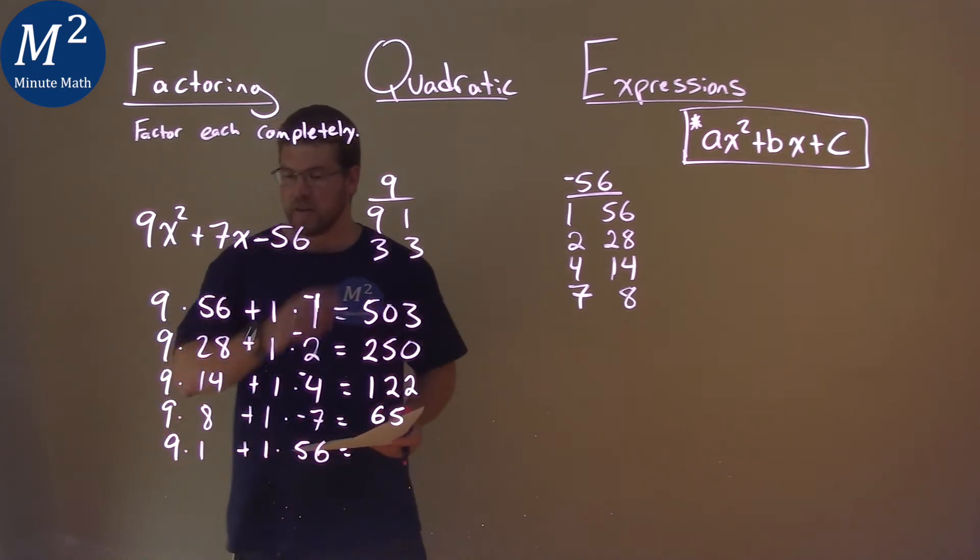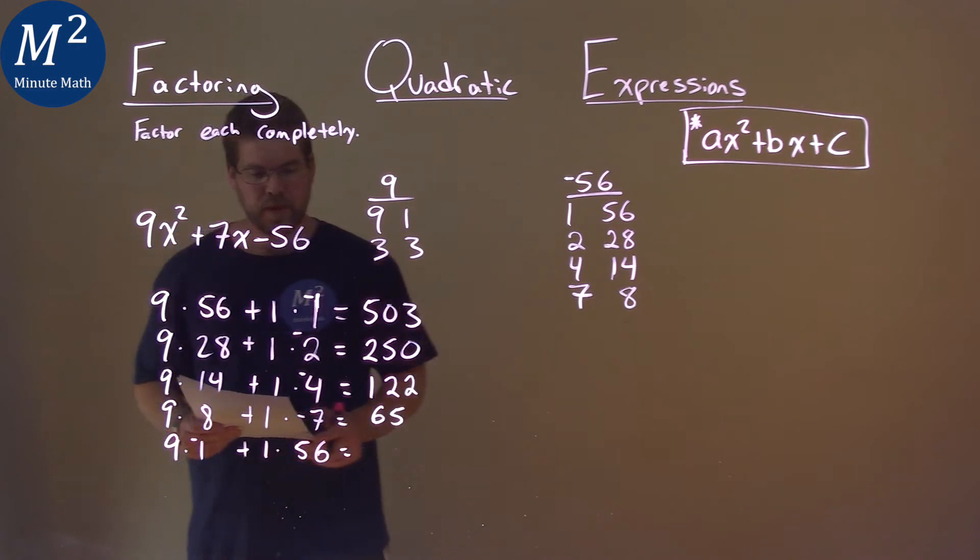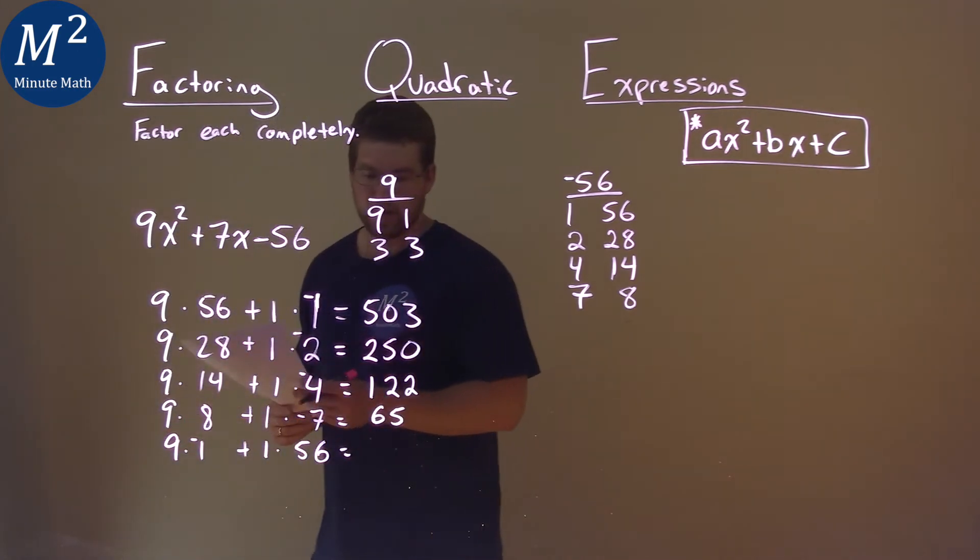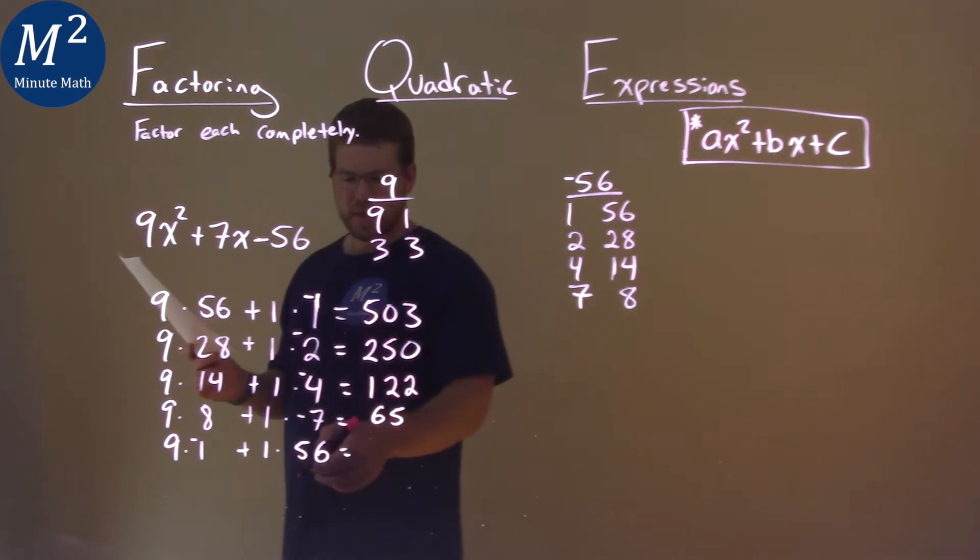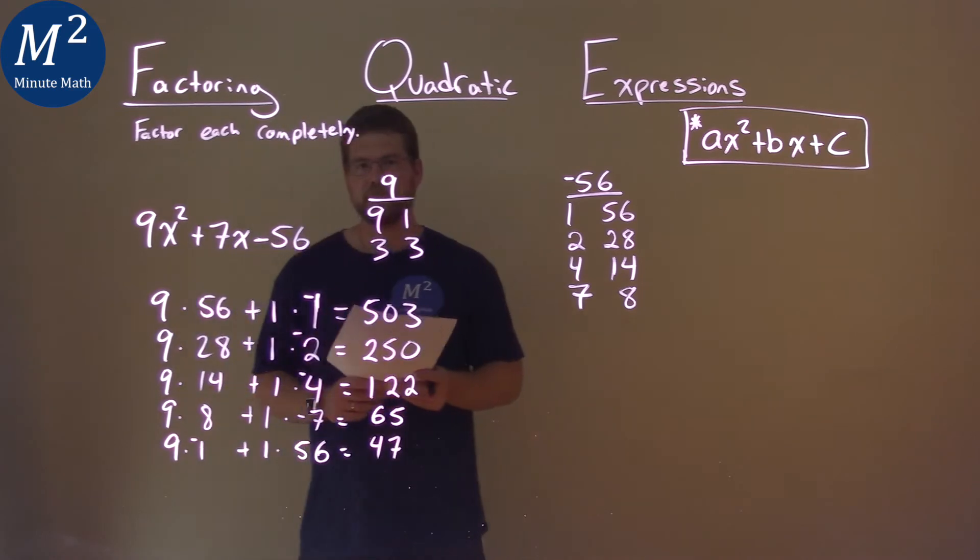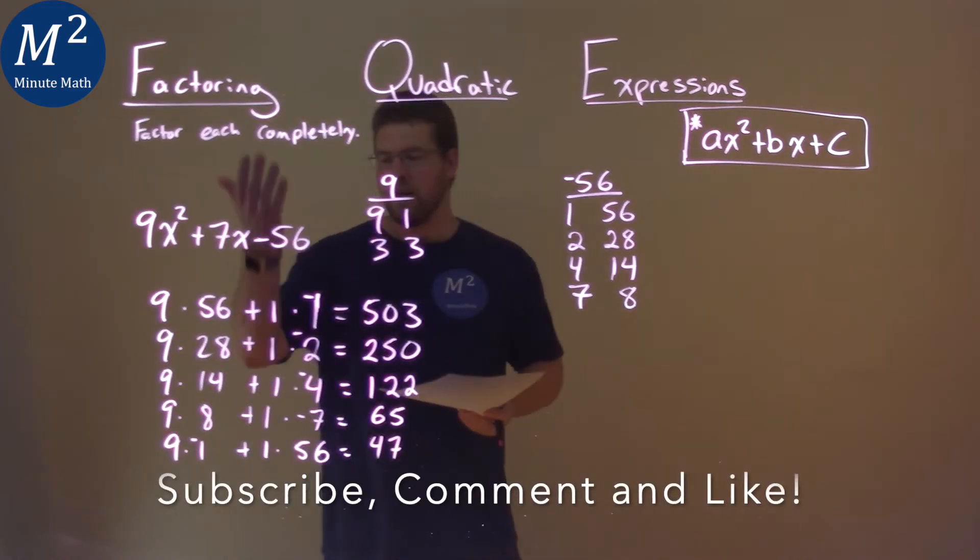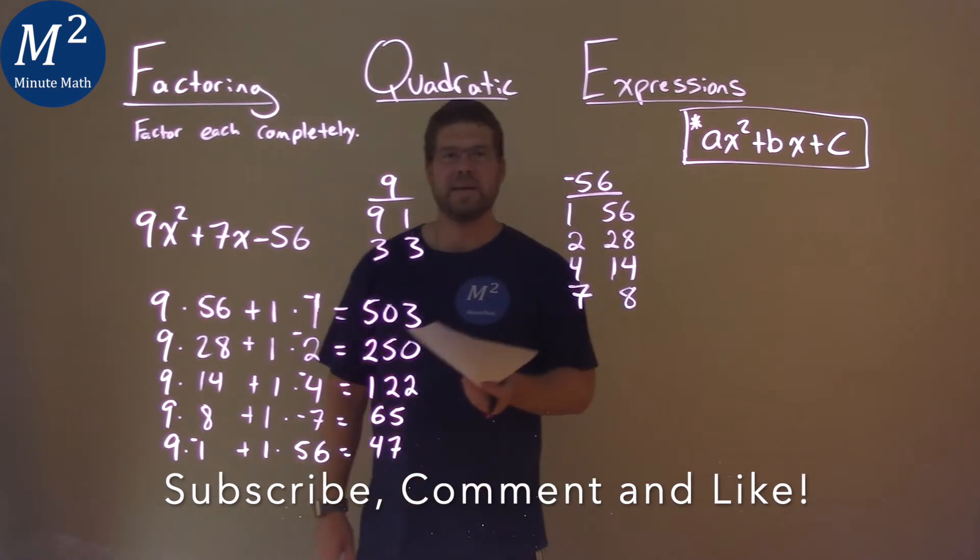Clearly, the 9 times the 1 is less of the two values paired up. So I put a negative here and then 9 times negative 1 plus 1 times a 56. What does that come out to be? Is that a 47? Positive 47. Again, not equal to 7. Well, to save time here, none of these pairs with 9 and 1 will work for any of these with one of them being negative. So let's go try the 3s.